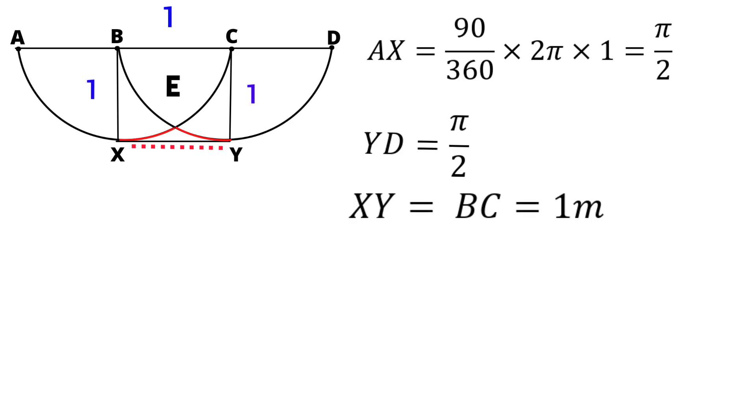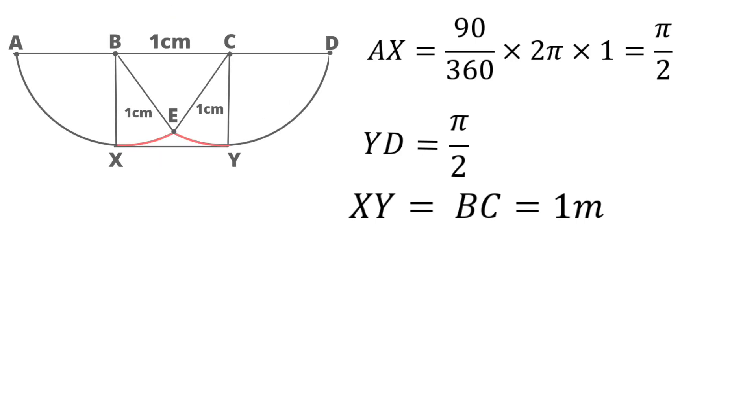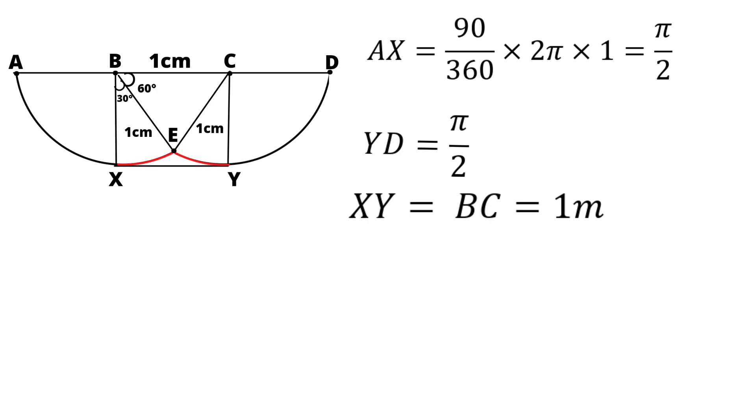Now, let's calculate the arc lengths of XE and EY. To calculate XE, let's join BE and CE. Now, BEC is an equilateral triangle in which each angle is equal to 60 degrees. We know that angle CBX is equal to 90 degrees. Therefore, angle EBX is equal to 30 degrees. Now, let's calculate the arc length of XE. XE is equal to 30 degrees divided by 360 degrees times 2π times the radius value is 1.